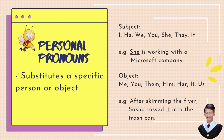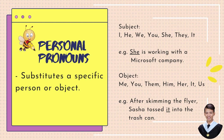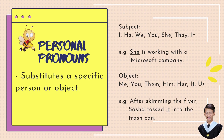And for our objective personal pronouns, these are: me, you, them, him, her, it, and us. Example: After skimming the flyer, Sasha tossed it into the trash can. So, the underlined word 'it' is our objective personal pronoun because it substitutes a specific name of an object.